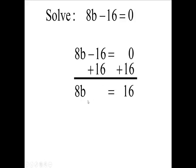And then when we divide both sides of this equation by the coefficient of the variable, our variable's b, the coefficient is the 8. So I'm going to divide this side and this side by 8. Divide 8b by 8 and divide 16 by 8. We're going to get b is 2.